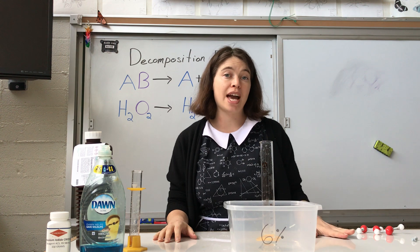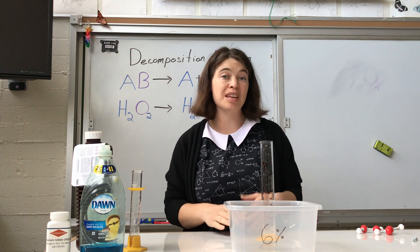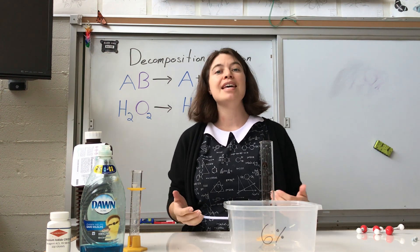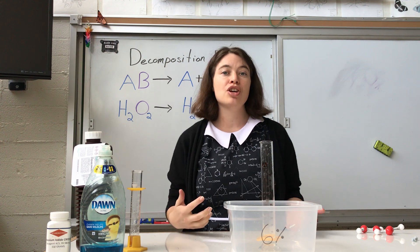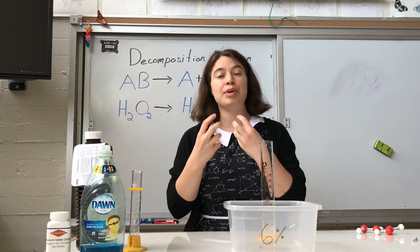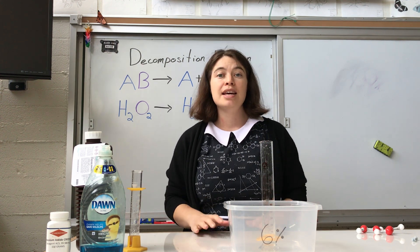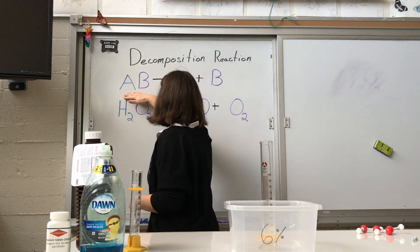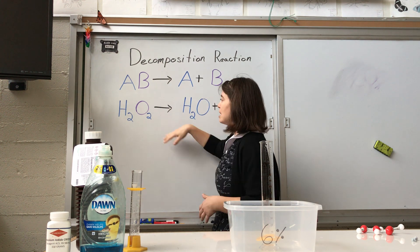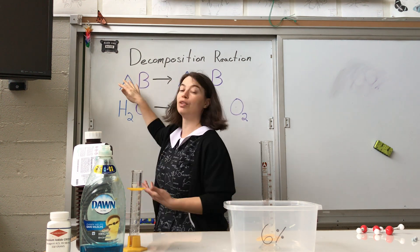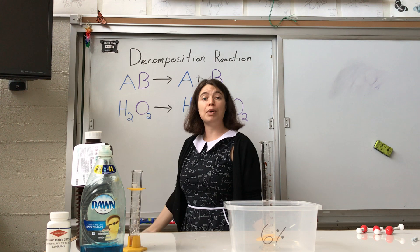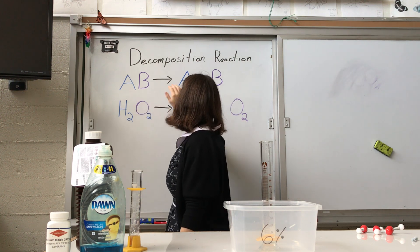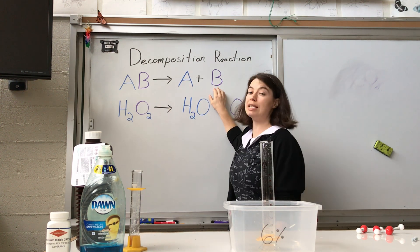While in a synthesis reaction you take small molecules and build something big out of them, in a decomposition reaction we take a big molecule and break it down into smaller pieces. Now the generic form for this kind of chemical reaction is AB yields A plus B, and this just means AB here represents some sort of large molecule made out of multiple atoms, and it's going to break down into smaller pieces.